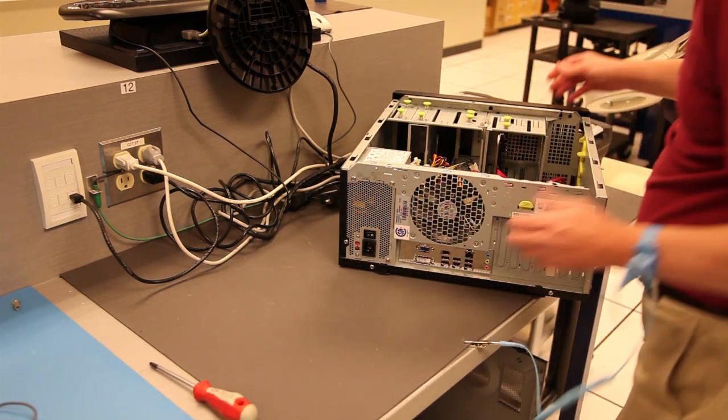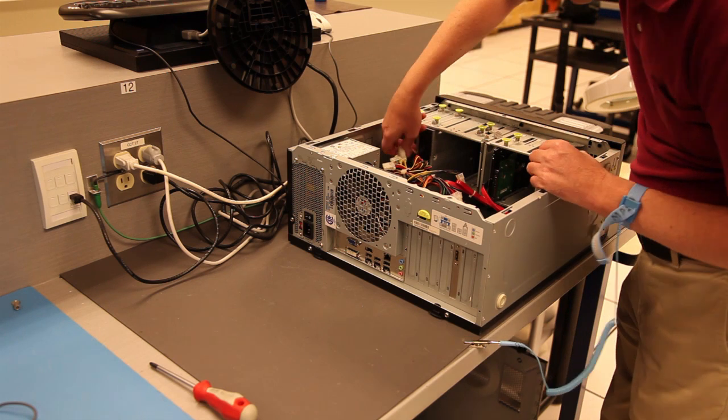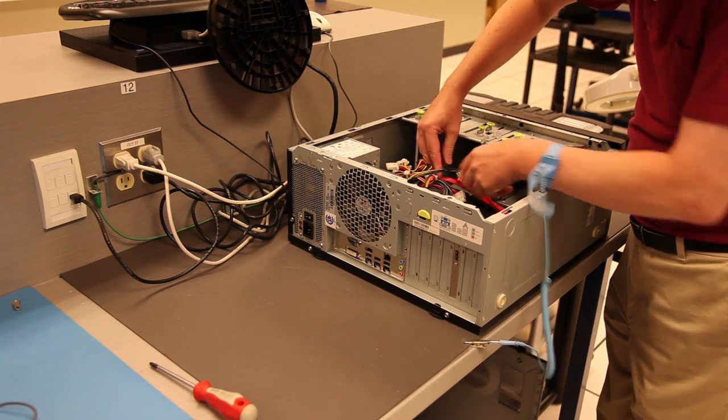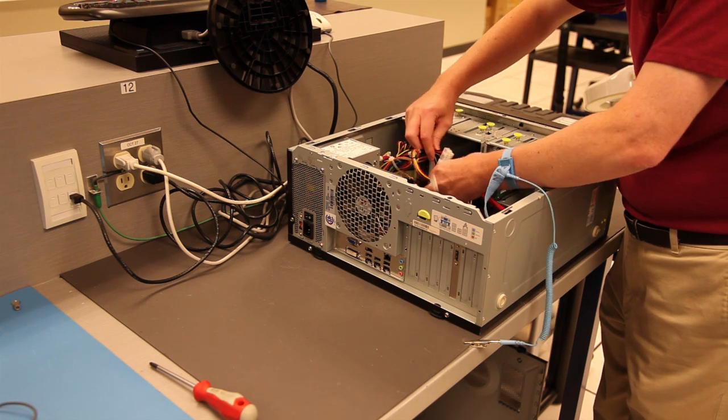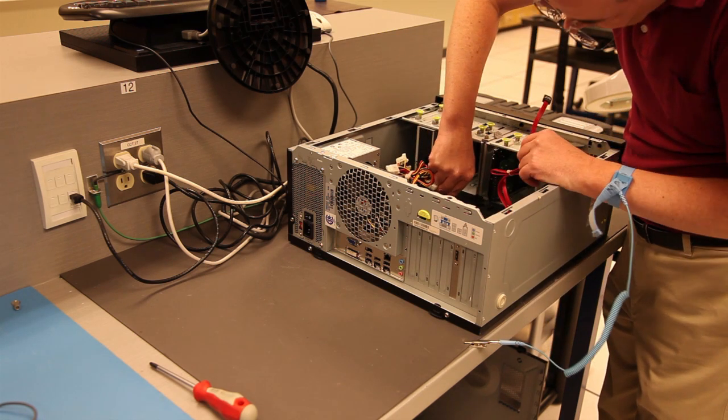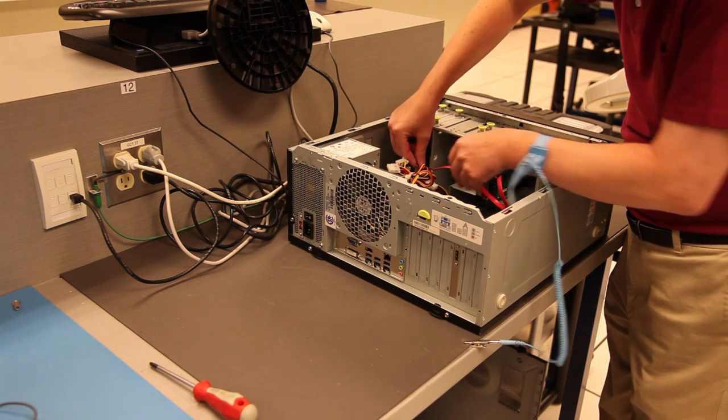Now reconnect all of the power cables to the devices that you unplugged them from. While you're at it, check to make sure that any other cables didn't get unplugged accidentally when you were removing the power supply. The SATA cables for the optical drive and the hard drive do tend to become unplugged quite easily.